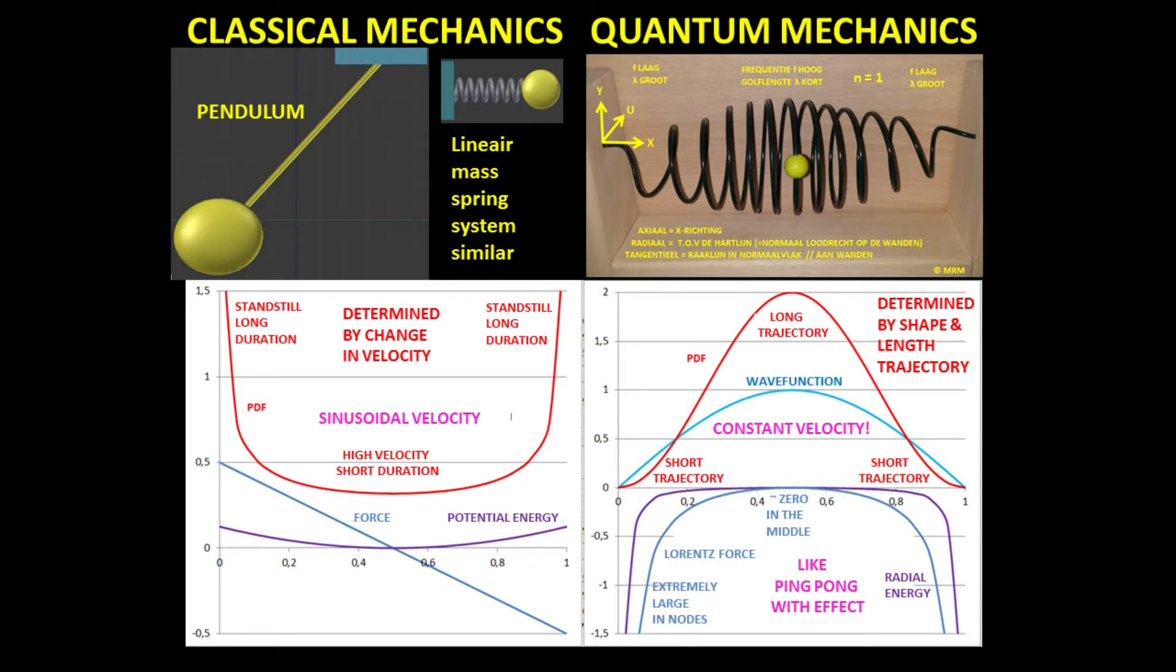Please note that the PDF is not dependent upon the number of windings within the helix spiral trajectory. Next to each other, the difference in PDF and the forces involved become very clear. In summary, one could say that the classical PDF is determined by the change in velocity. In quantum mechanics, the PDF is determined by the relative length of the helix spiral trajectory.